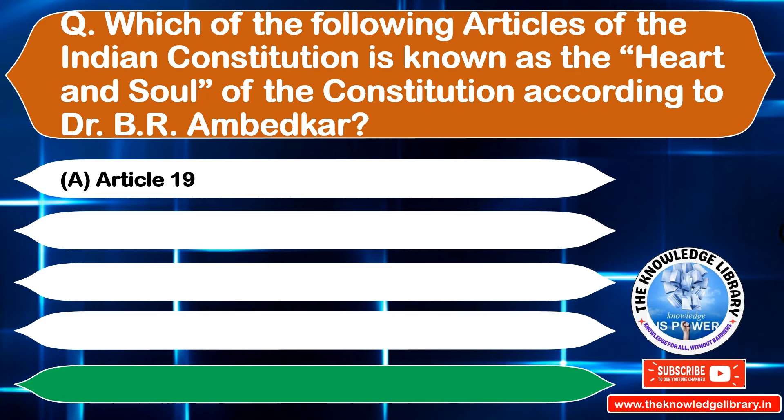The next question is: which article guarantees the freedom of religion? Option A: Article 23, Option B: Article 24, Option C: Article 25, Option D: Article 26. The correct answer is Option C: Article 25.